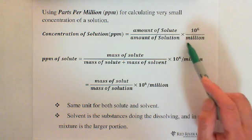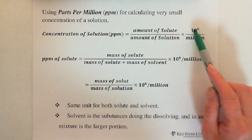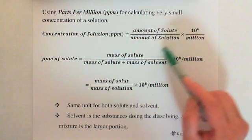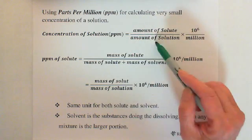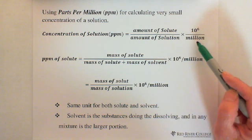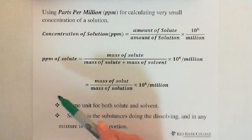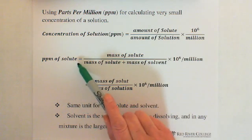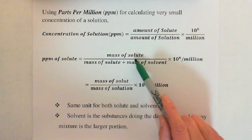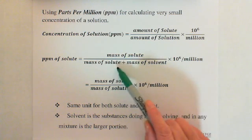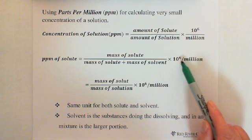10 to the sixth is million, so over million this equals one. When we have this fraction, we multiply by 10 to the sixth, which gives per million. So PPM of solute equals mass of solute over the quantity mass of solute plus mass of solvent, multiplied by 10 to the 6, per million.